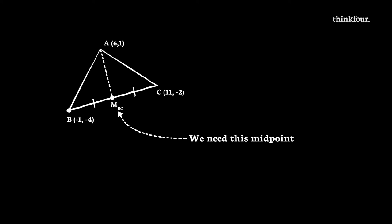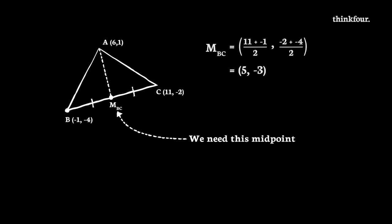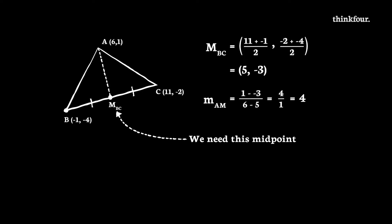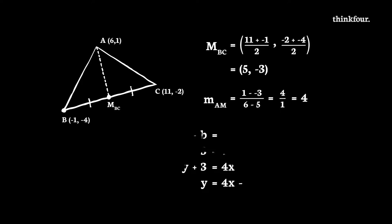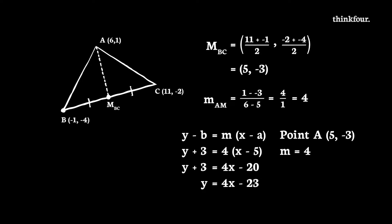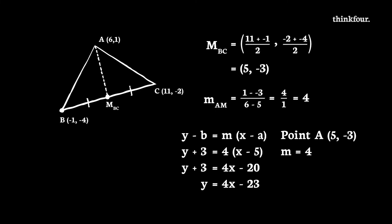Before we can work out the gradient, we need to find that midpoint, marked M on the diagram. The midpoint has coordinates 5, negative 3. We can then calculate the gradient of the median using points A and M. It has gradient 4. So now we're ready to find the equation of the median using point A and the gradient of the median. The resulting equation is Y equals 4X minus 23.